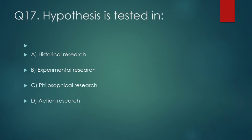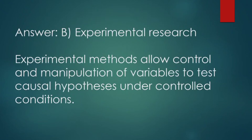Hypothesis is tested in: (A) Historical research, (B) Experimental research, (C) Philosophical research, (D) Action research. Correct answer: Experimental research. Experimental methods allow control and manipulation of variables to test causal hypotheses under controlled conditions.